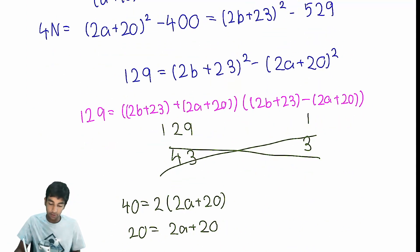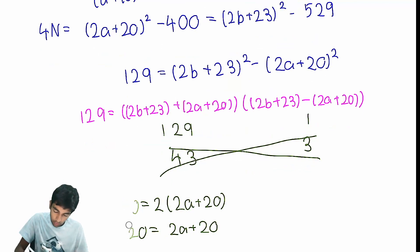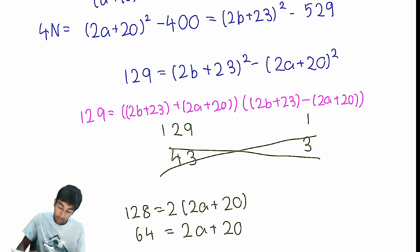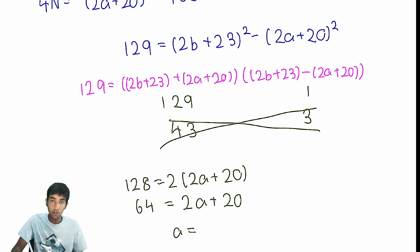Therefore, it has to be the first case. And to do the first case, we can do some similar logic here. We'll just say 128, the difference between these two things, is 2 times 2A plus 20. And from here we get 64 is 2A plus 20, or A is 64 minus 20 divided by 2, which is 22.